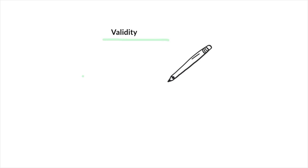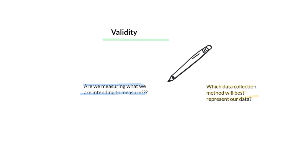Validity is next. For this term, you want to ask yourself: are we measuring what we are intending to measure? This can be difficult in ABA. We want to use the data collection procedure that will best represent our data. For behaviors that are clear and concise with a discrete beginning and end, we can use something like frequency — just tracking the number of times it's happening. We have to be careful not to over-represent or under-represent what's actually happening.